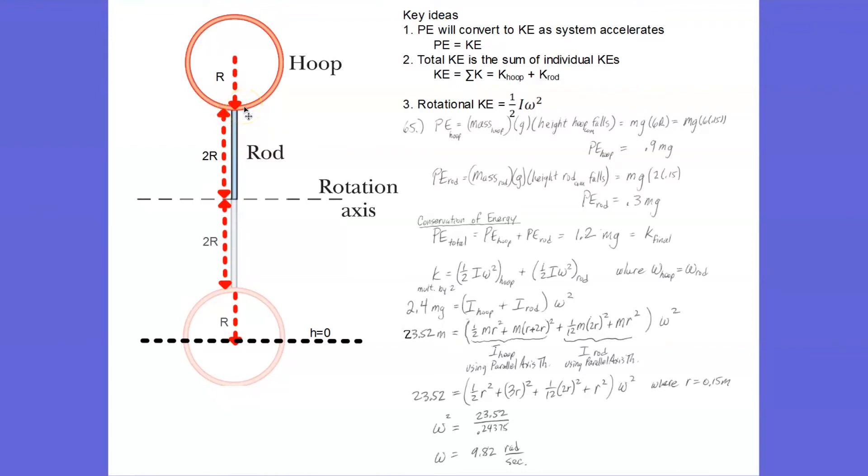And what do I measure the height with respect to? So it's a good idea to choose the lowest point as the reference, or h equals zero. And here you can see I have chosen the lowest point to be h equals zero. And also you notice, I have chosen the center of the ring to be the place where I measure distance from.